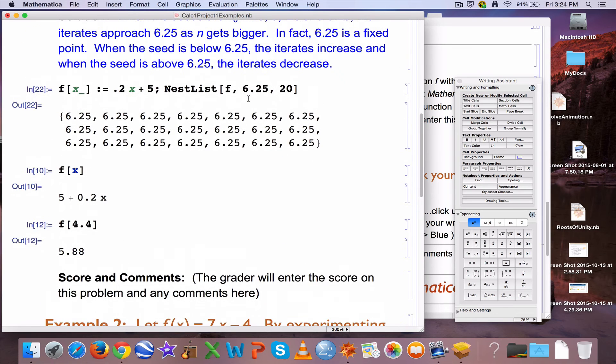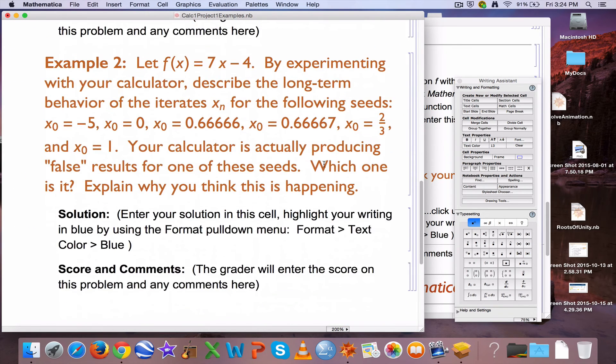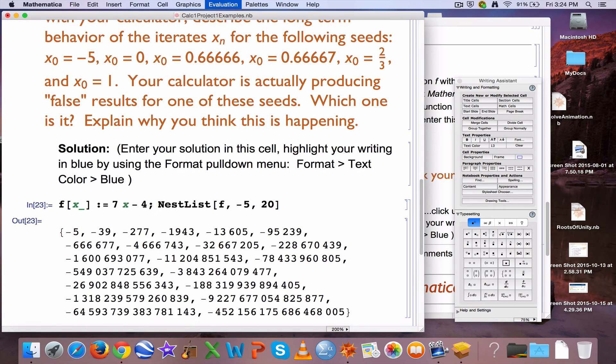Let's quickly consider another example. Let's do a little copy-paste action here. Example 2. The function is different. Now it's 7x minus 4. The iterates, or the seeds are different as well. Let's go ahead and start with negative 5 as the seed. Let's see. Let's see what happens. Whoa!